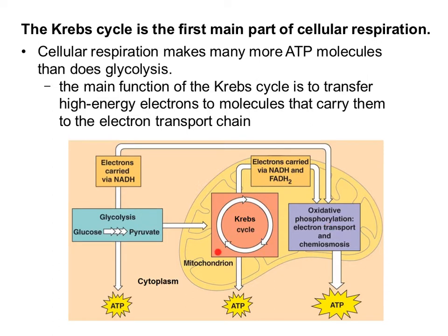Now let's look at the Krebs cycle. The main function of the Krebs cycle is to actually transfer electrons from the pyruvate — or we're going to see it actually changes into something else before it enters the Krebs cycle — but it's going to extract those electrons and transfer them to NAD and FAD, forming our high energy electron carriers, which are also going to head over to this last step.